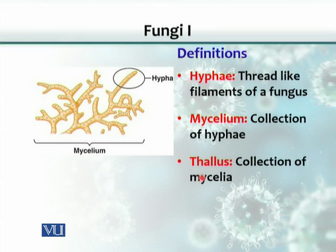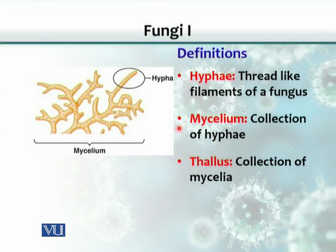There is another word called thallus. Thallus is basically a collection of mycelia. All three words — hyphae, mycelium, and thallus — define the thread-like structure of the fungus. A few hyphae combine into mycelium, and if mycelia are combined, they give rise to a thallus, which is the body of the fungus.